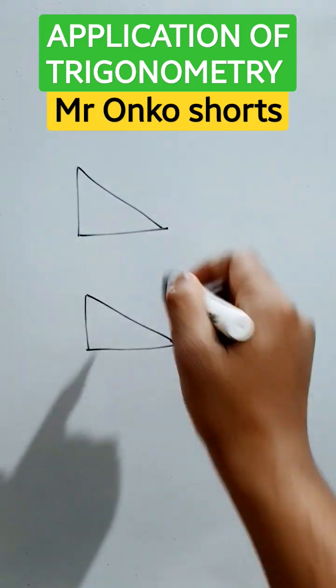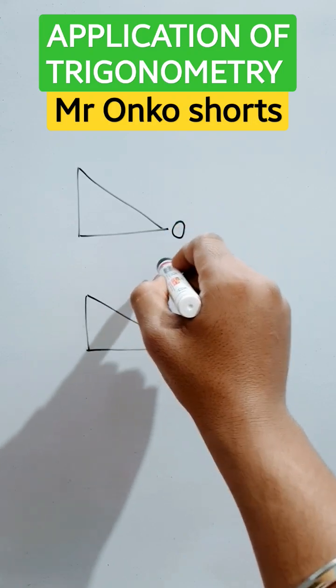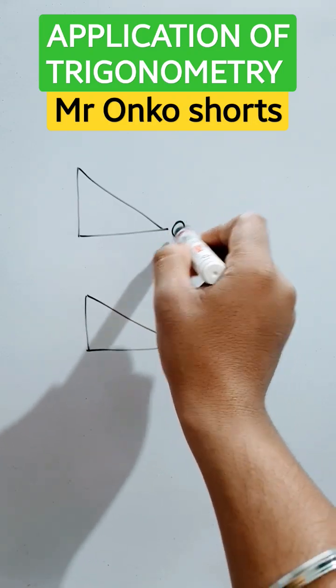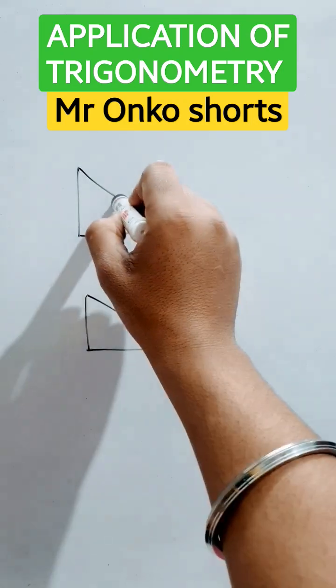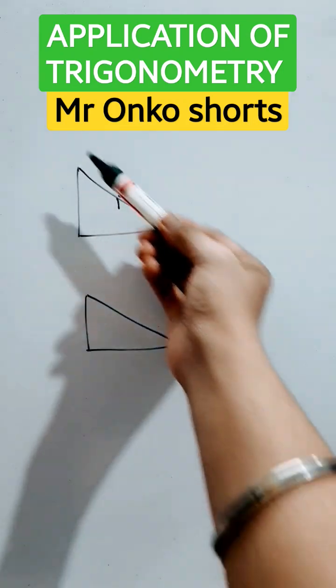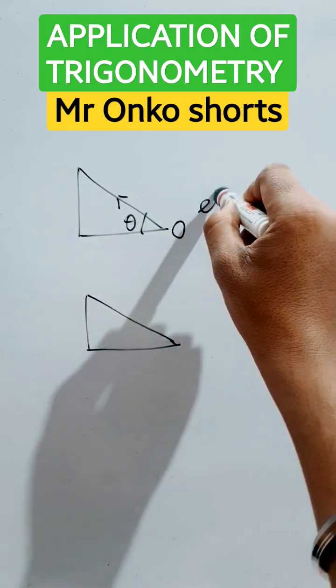In the above picture, the observer is at this point on the ground and he or she has to observe the top of the height. He has to look upward. This is the angle of elevation.